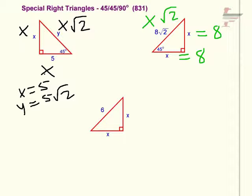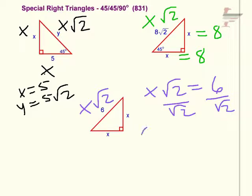Now our third and final example is going to be one of our harder ones because we've got X and X and 6 is on the X root 2 side so we actually have to solve X root 2 equals 6. So if you divide both sides by root 2 you get X equals 6 over root 2.